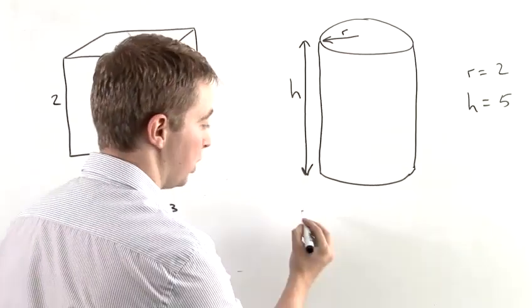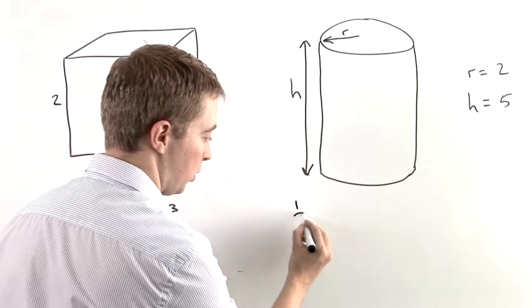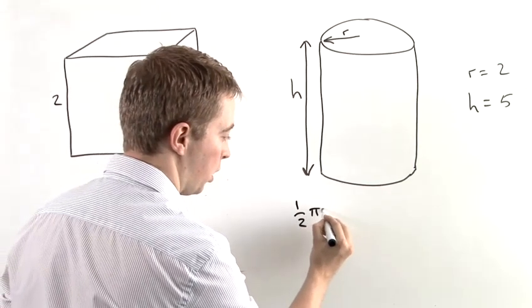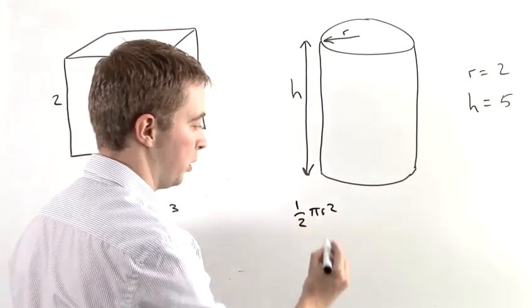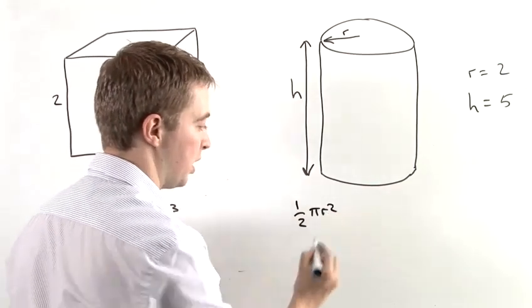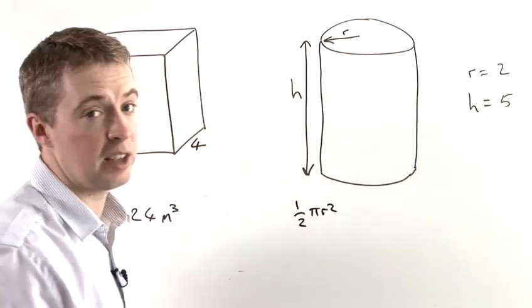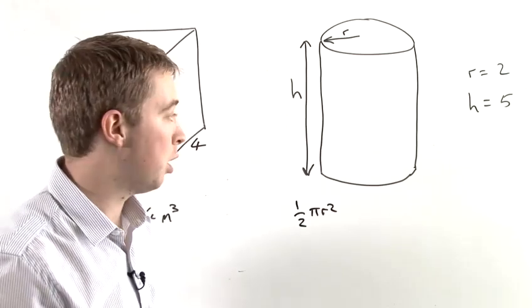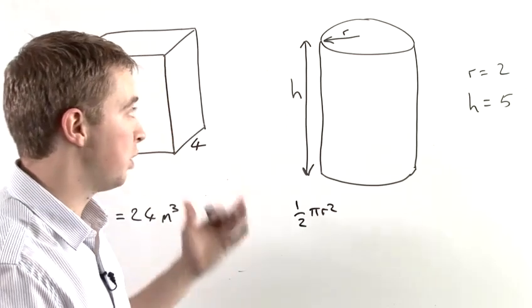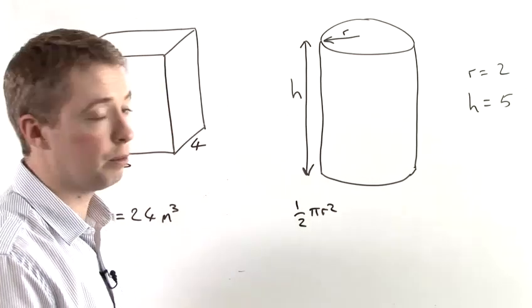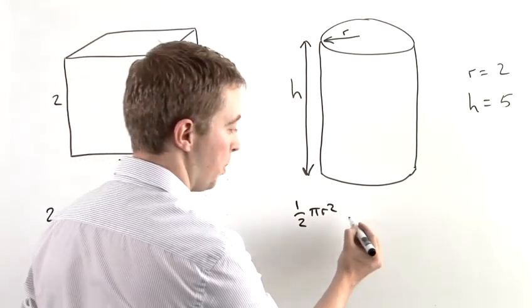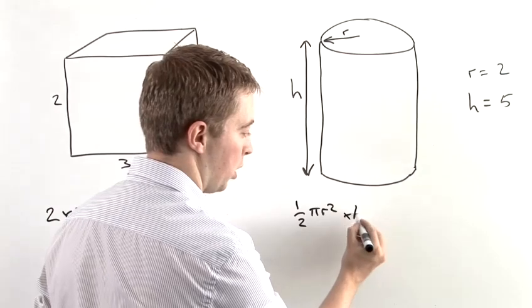So the area of the disc is pi r squared. That's the way to work out the area of a circle. And to find the volume of the cylinder, we're going to multiply that by the height.